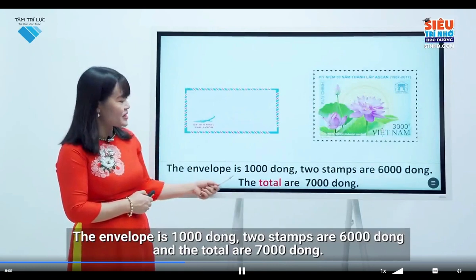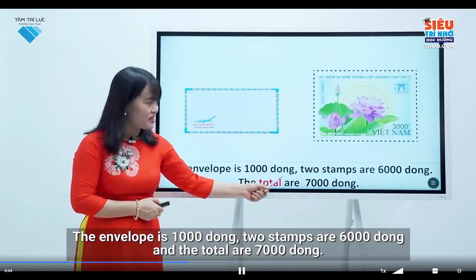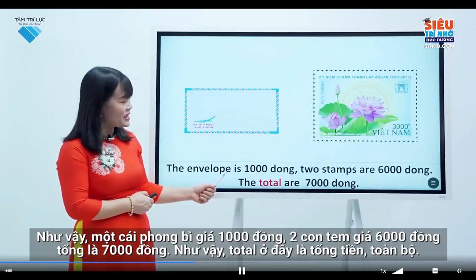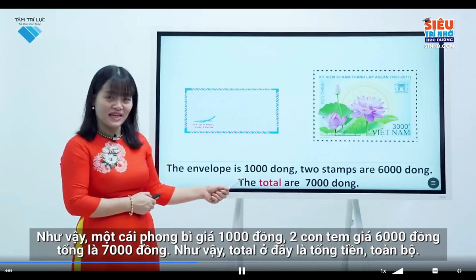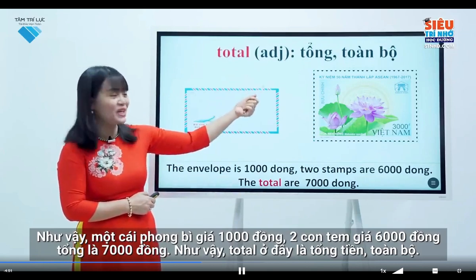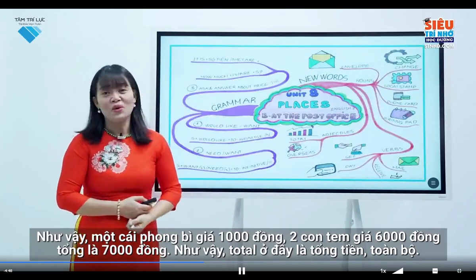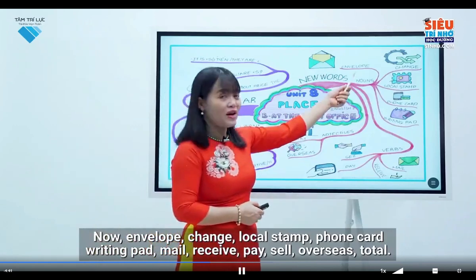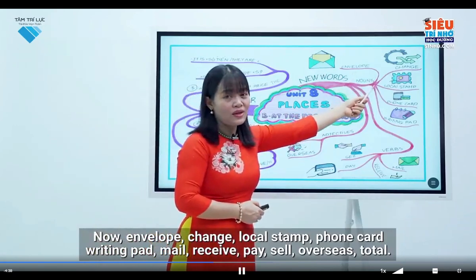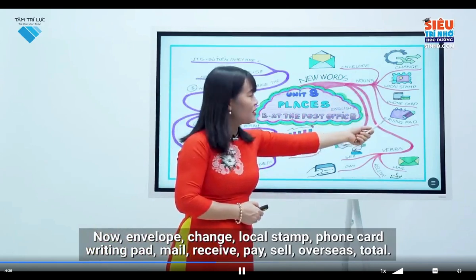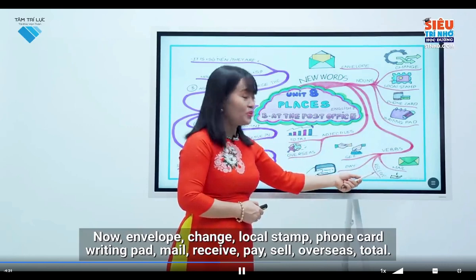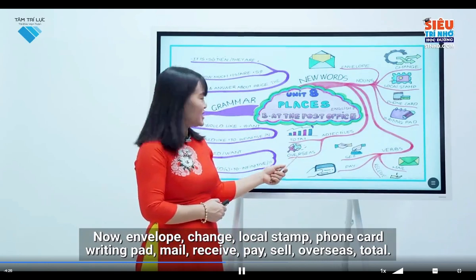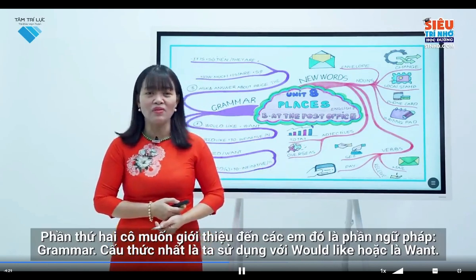The envelope is 1,000 dong. Two stamps are 6,000 dong. And the total is 7,000 dong. Total is a noun. I have just taught you some new words related to the topic of the lesson. Repeat after me one more time: Envelope, Change, Local stamp, Phone card, Writing pad, Mail, Receive, Pay, Sell, Overseas, Total.